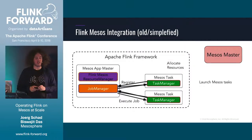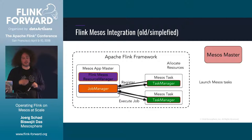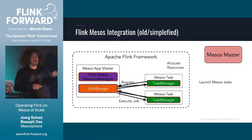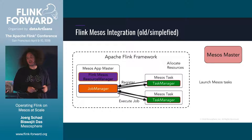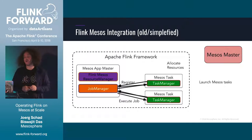How do Flink and Mesos work together? In this simplified picture, the resource and job manager talk to the Mesos master. The Mesos master forwards resource offers to Flink — it tells Flink: 'I have five CPUs and 10 gigabytes of RAM, what can you do with that?' Flink then decides whether to start a new task with those resources. Those tasks run across the cluster, and the job manager dynamically spins up a cluster for the Flink job.